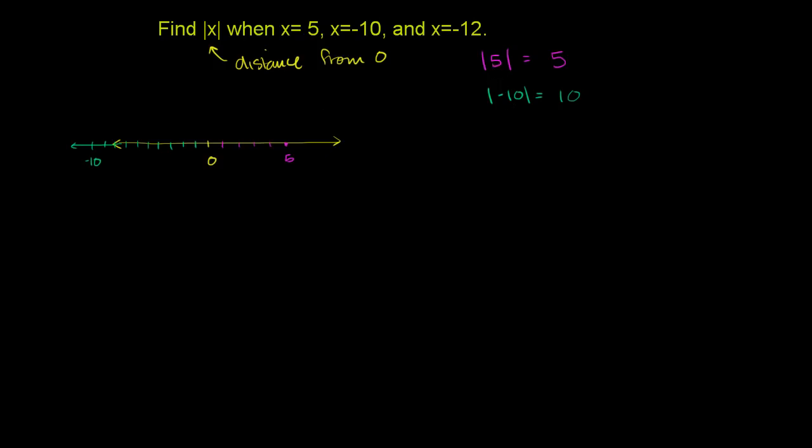Let's do one more. Well, they tell us to do one more. The absolute value of x when x is equal to negative 12. So we have the absolute value of negative 12. We don't even have to look at the number line. It's just going to be the positive version of negative 12. It's just going to be equal to 12. And this is just saying that negative 12 is 12 away from 0.